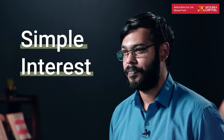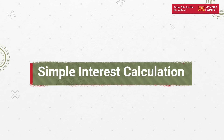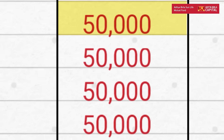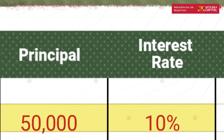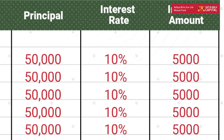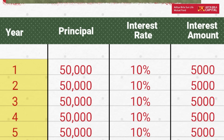The term 'power of compounding' is simply a slang for compound interest. To understand that better, let us first understand what simple interest means. Simple interest refers to the interest you get on your principal every single year. Let's take the example of Ankit — Ankit invests ₹50,000 in a fixed deposit at an interest rate of 10 percent.